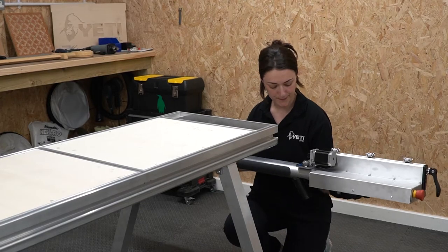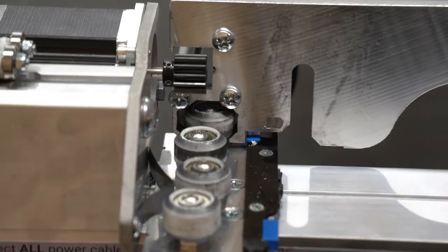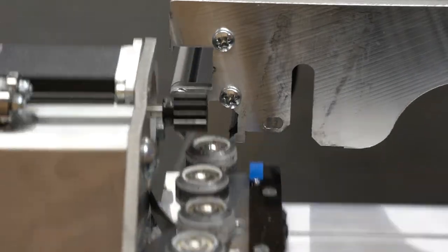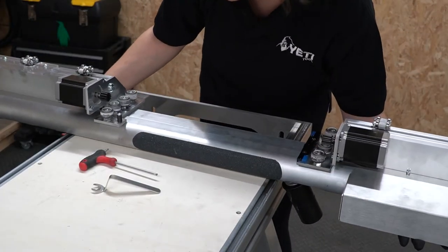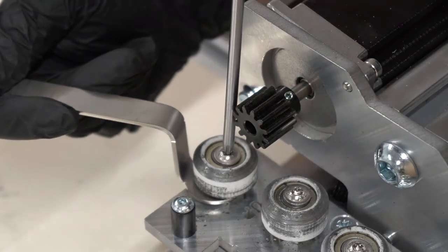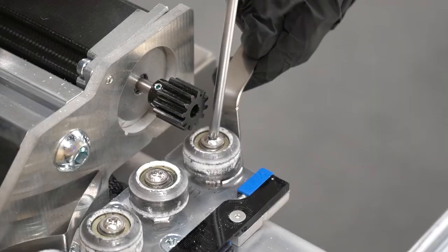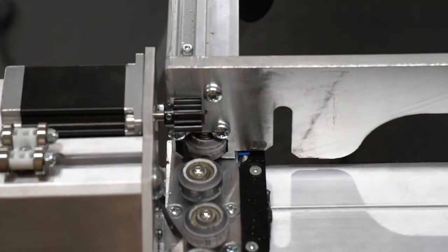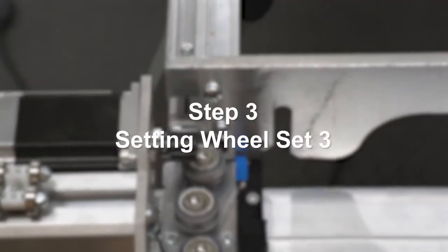Insert wheel set one into the channels of the Y bench to test the fit. You are looking for a light pop as the wheels go in. In this case the wheels are giving little resistance so we will need to increase the pre-load. To increase the pre-load rotate your bearing adjusters anti-clockwise slightly. Ensure you are making the same adjustments for both sides. Once again offer up your lower X beam to the channels. Now they are engaging nicely we can move on to wheel set three.